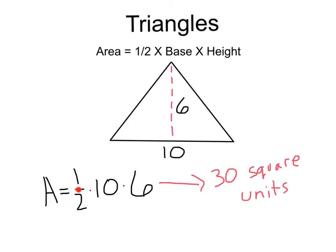In this example, we've got 1 half times the base, 10, times the height, 6, which would give us 30 square units.